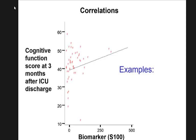When you have only one group — for example, patients who came to ICU — and you assess both biomarker and three-month cognition, you want to see when the biomarker increases whether cognition increases or decreases. That's called correlation. You might do Pearson's or Spearman's correlation.